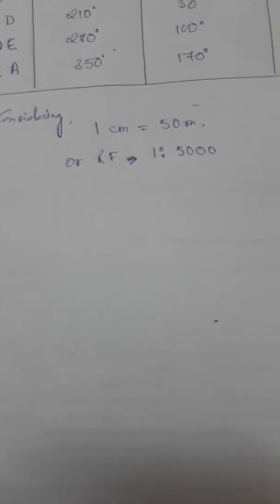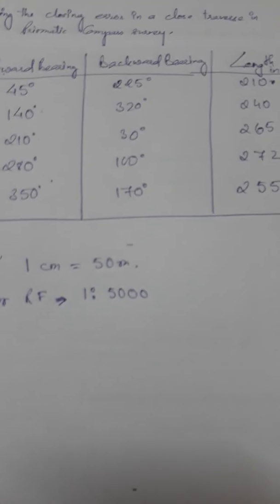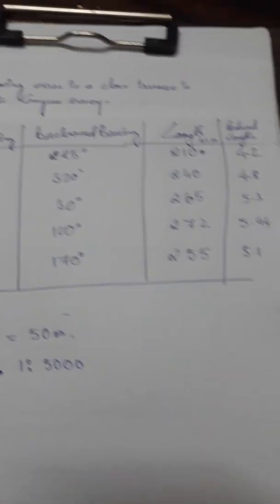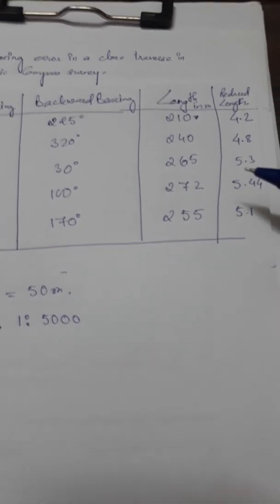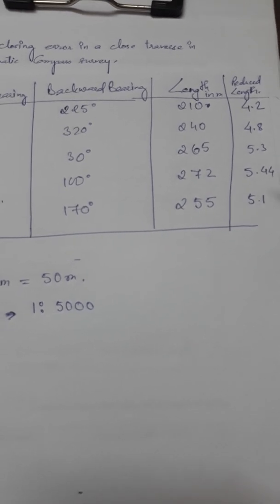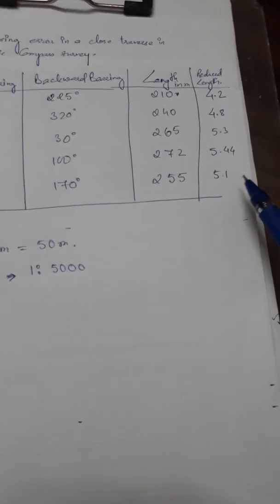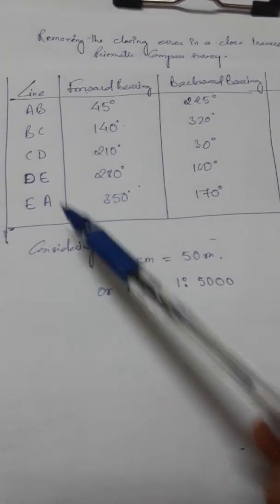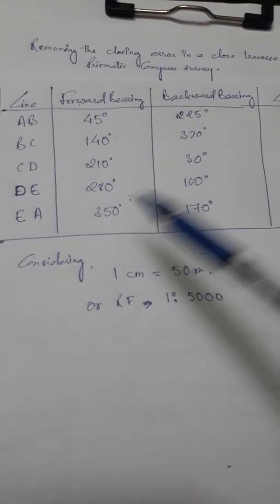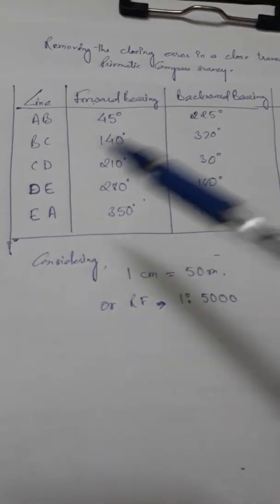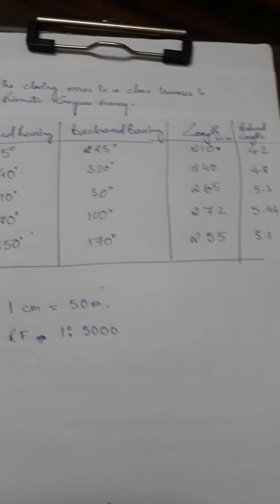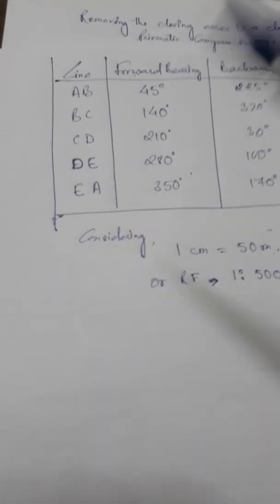Let me put the reduced length here. I will reduce the length using this scale: one centimeter represents 50 meters, or equivalently an RF of 1 to 5000. You can choose your own scale or use the one given in the question. Here are the reduced lengths. Now we will use this reduced length and either the forward or backward bearing for plotting this traverse. I will be using the forward bearing and the reduced length for representation of this closed traverse.